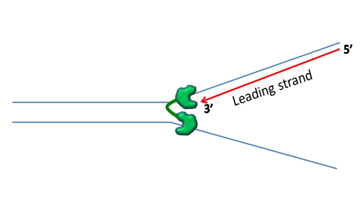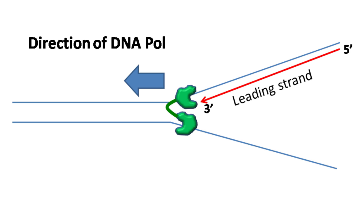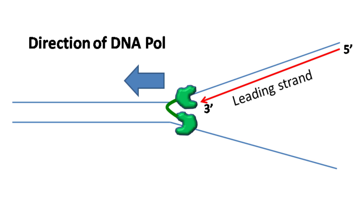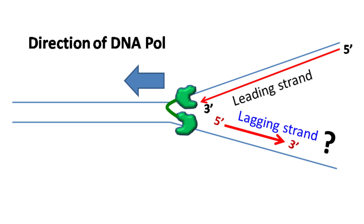Now let's talk about elongation. Elongation occurs after DNA polymerase III is loaded during initiation. During elongation, there is synthesis of the leading strand and the lagging strand. The synthesis of the leading strand occurs in a continuous fashion, in the direction of movement of the DNA polymerase enzyme. However, the synthesis of the lagging strand must occur in the opposite direction.